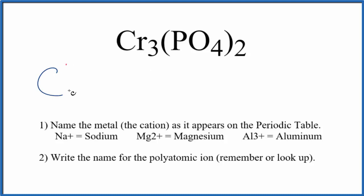First we write the name for the metal as it appears on the periodic table. Cr, that's chromium. Next we write the name for the polyatomic ion, the phosphate ion, lowercase p. The name for Cr3(PO4)2 is chromium phosphate.